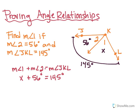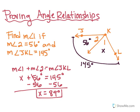How would I solve this equation? I'm going to subtract out the 56, and that should solve my angle for the measure of angle 1, which is equivalent to 89 degrees. So that's all the angle addition postulate says.